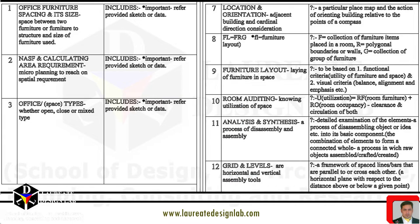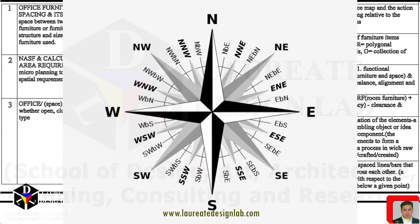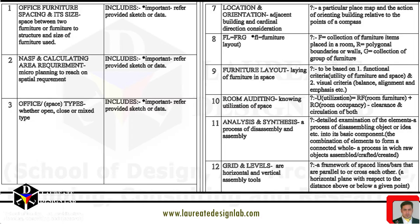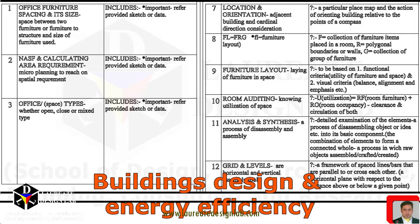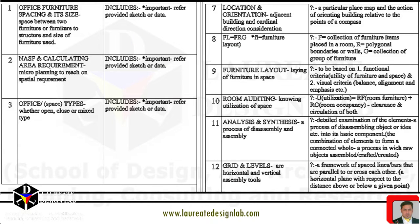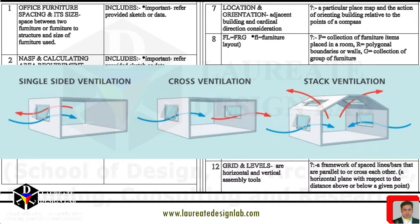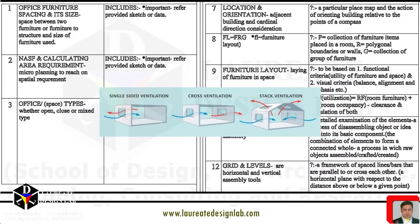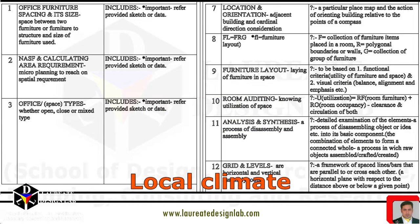The location and orientation of a building with respect to the cardinal directions — north, south, east, and west — can have a significant impact on the building's design and energy efficiency. Orienting a building towards the south can maximize natural light and solar gain during the winter months, while orienting it towards the north can minimize solar heat gain during the summer months. Additionally, proper orientation can also improve natural ventilation and reduce the need for artificial heating and cooling. In planning a building, it is important to consider the local climate and the specific needs of the building's occupants to determine the optimal orientation and location.